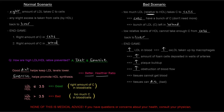An LDL to HDL ratio lower than or equal to 3.5 is considered good because you have the right amount of cholesterol in your blood and cells, whereas a ratio higher than 3.5 is bad — you have too much cholesterol in your blood and cells, which of course is damaging.